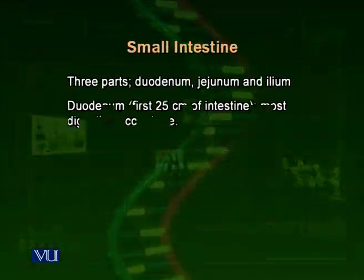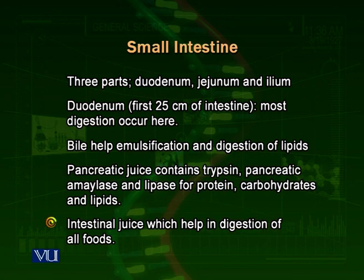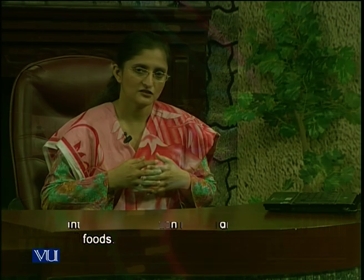So digestion proceeds towards completion. The duodenum also releases its own juices called intestinal juice. Intestinal juices contain various enzymes which further break down carbohydrates, fats, lipids, and starch into smaller ingredients. Therefore, the duodenum is the part of the intestine in which very active digestion of carbohydrates, fats, and proteins occurs.